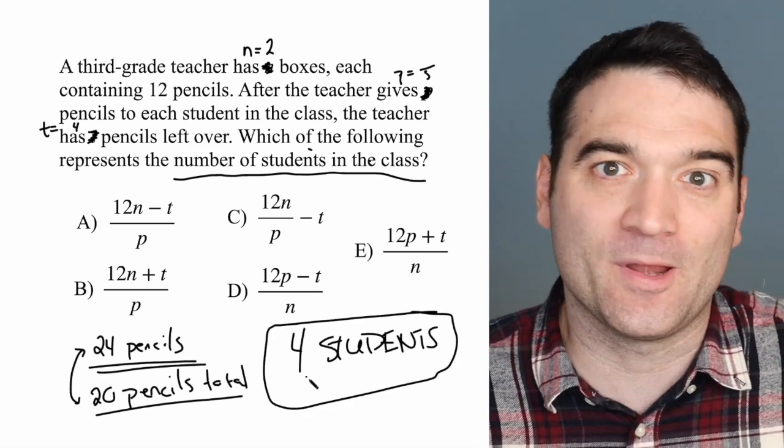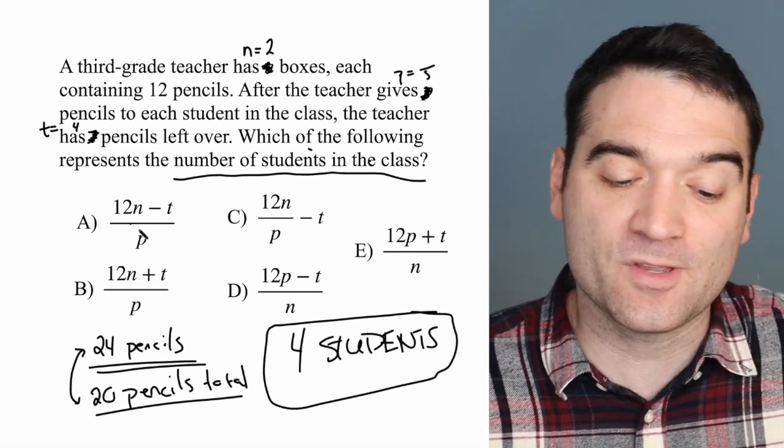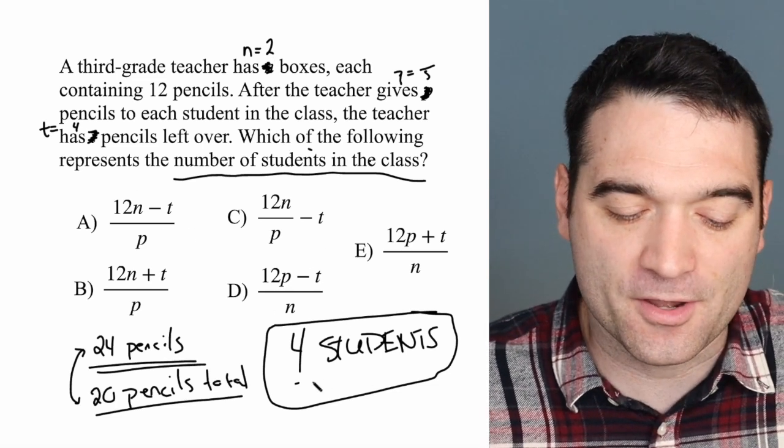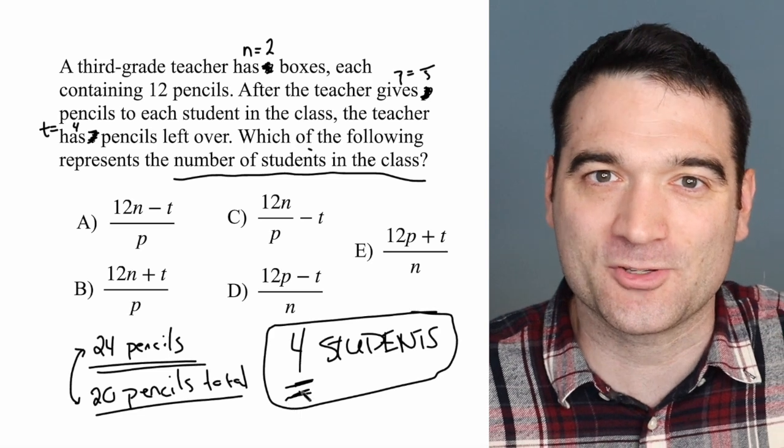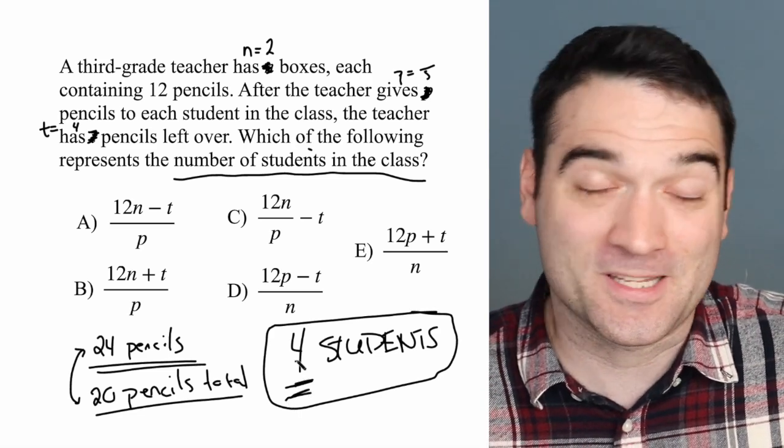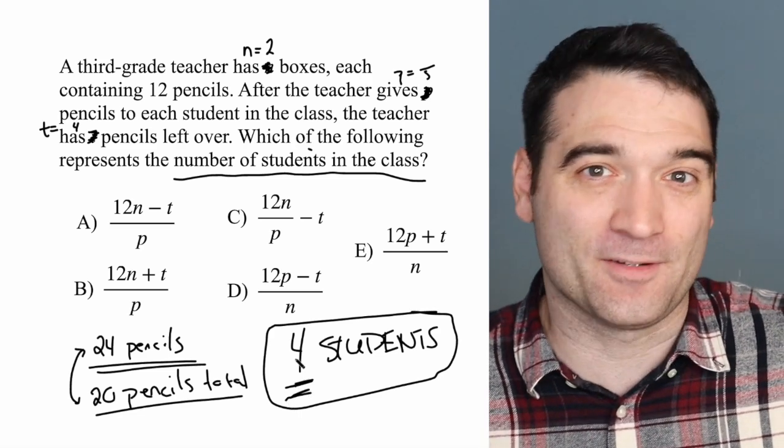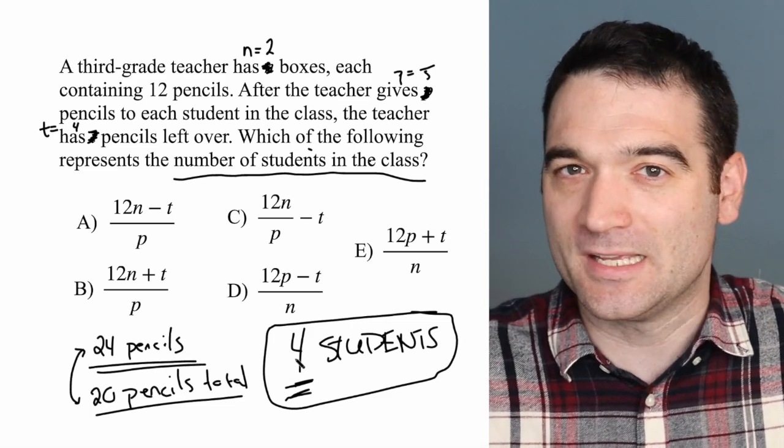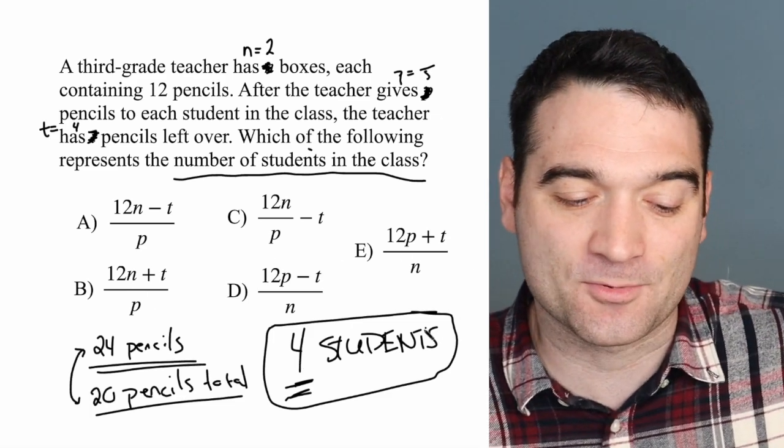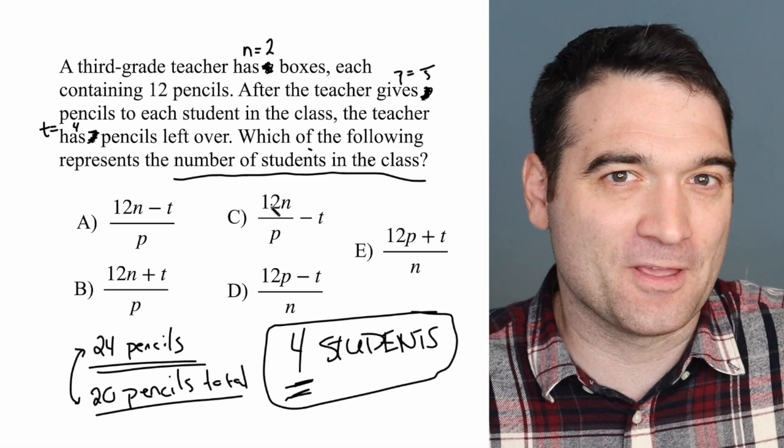The last step that we need to take here is plug the numbers that we chose into the answer options. And whichever one gives us the number four answers this question, that's the winner. What's nice about this is you don't have to think about it very much. You can just pick numbers, see what happens, and then match the answer option. Try out your own numbers if you don't buy this.